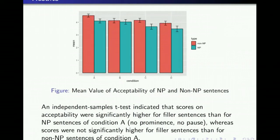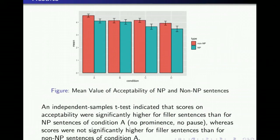The figure illustrates the mean value of acceptability of NP and non-NP RD sentences across four conditions. The mean values of all conditions were above three, showing that native Mandarin speakers have a wide range of tolerance for RD sentences in terms of variation in prominence and pause. Among the four conditions, sentences in condition A — no pause, no prominence, with default intonation — were most acceptable, whereas sentences in condition D — prominence plus pause — were least acceptable. Within each condition, the mean value of the non-NP group was higher than the NP group. An independent samples t-test indicated that acceptability scores were significantly higher for non-NP sentences than for NP sentences in condition A, whereas scores were not significantly different for non-NP versus NP sentences in other conditions.